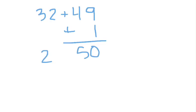32 plus 50 is much easier to add in my head. Add the 10 spots, which is 8. Add the 1 spots, which is 2.